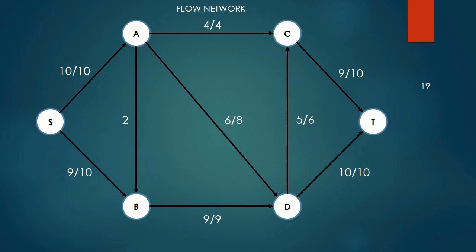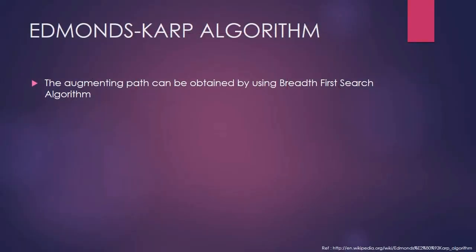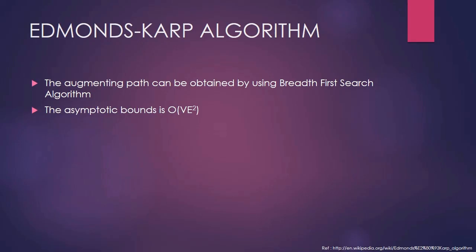This algorithm can be used in various real-life applications, one of which is image segmentation. There are various algorithms to define the augmenting path for Edmonds-Karp; one that can be used is the breadth-first search algorithm. The total number of critical edges, and thus the number of iterations, is O(VE). Each iteration runs in O(E) time, giving an asymptotic bound for this algorithm of O(VE²), where V is the number of vertices and E is the number of edges.